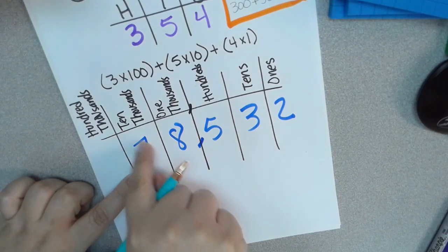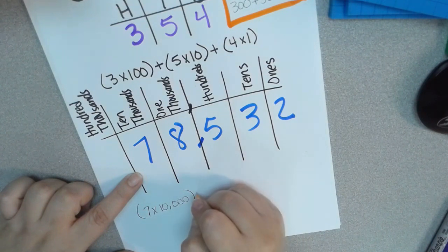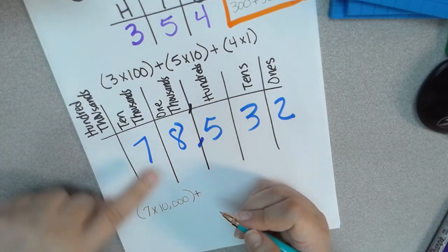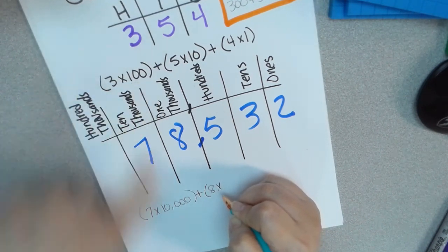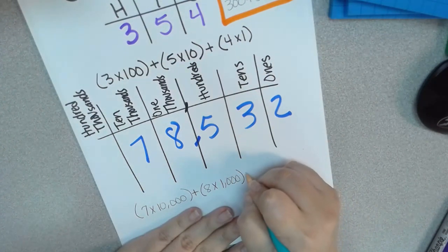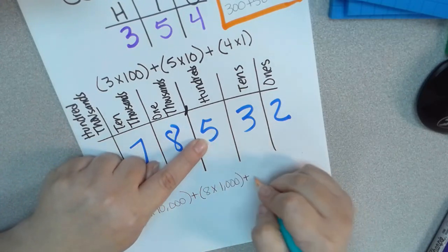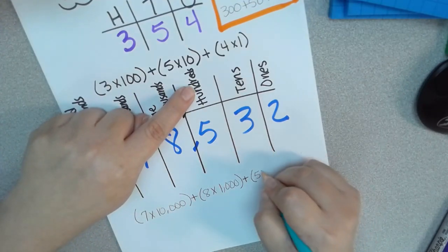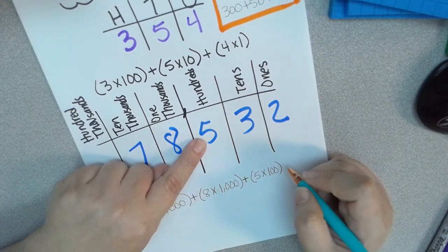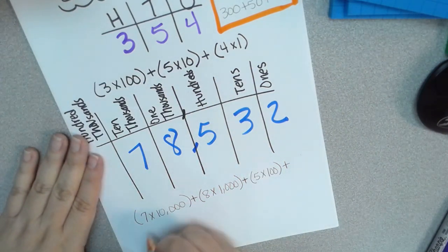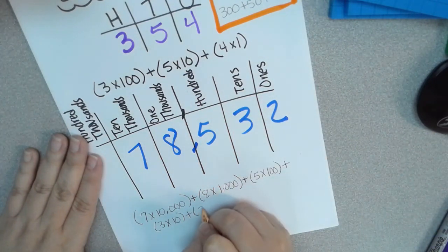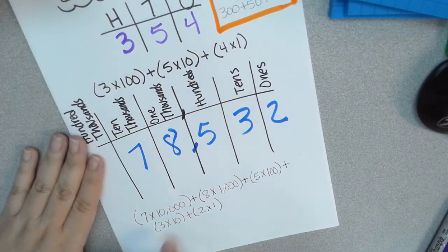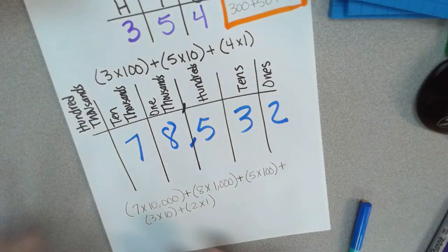Seven times ten thousand gives me seventy thousand, just like seven ten-thousands is seventy thousand. Then I'm taking the sum of all of these, so I'm adding them all together. In the one thousands place I have eight, so plus eight times one thousand. Then I have five in the hundreds place, so plus five times one hundred. Then three in the tens place, plus three times ten. And the last one — plus two times one. That right there is the expanded notation for 78,532.